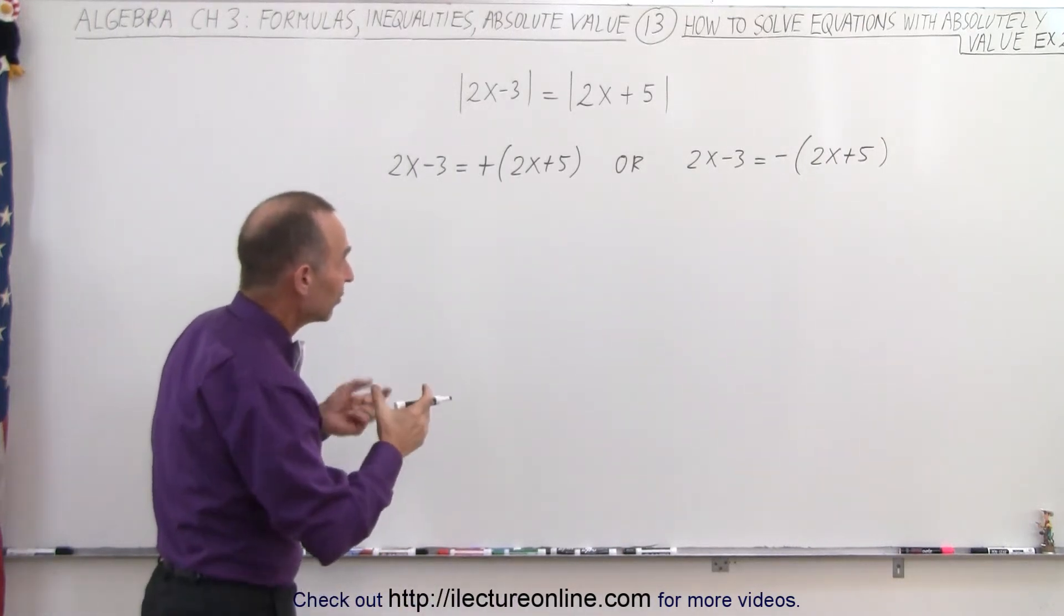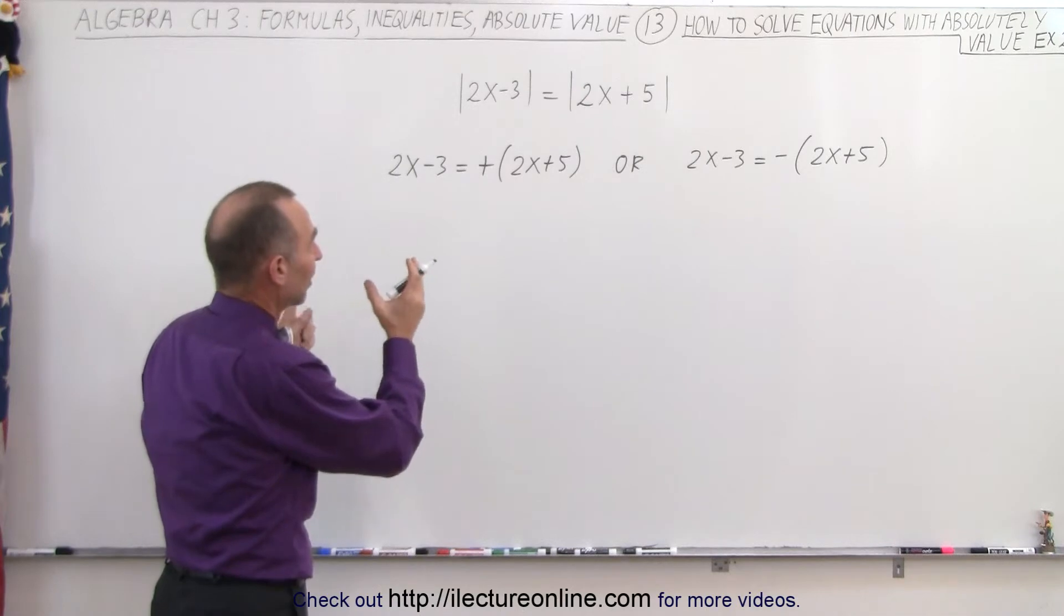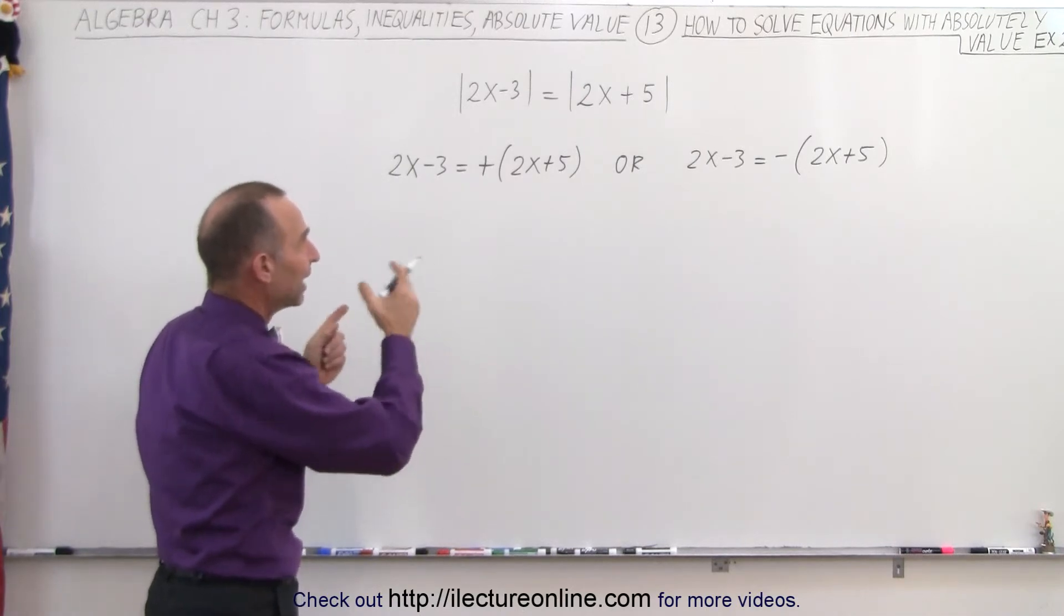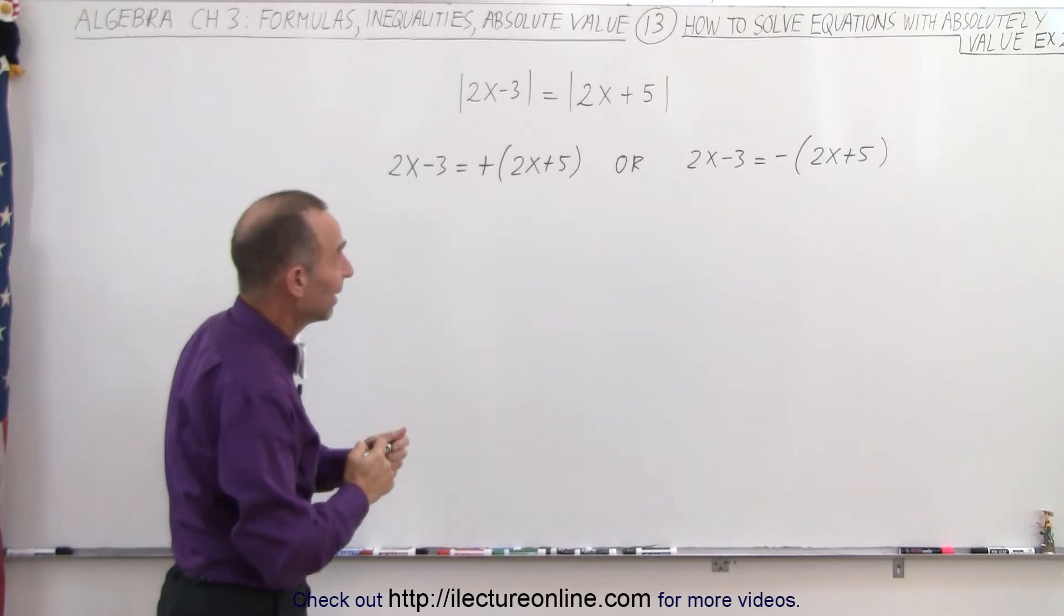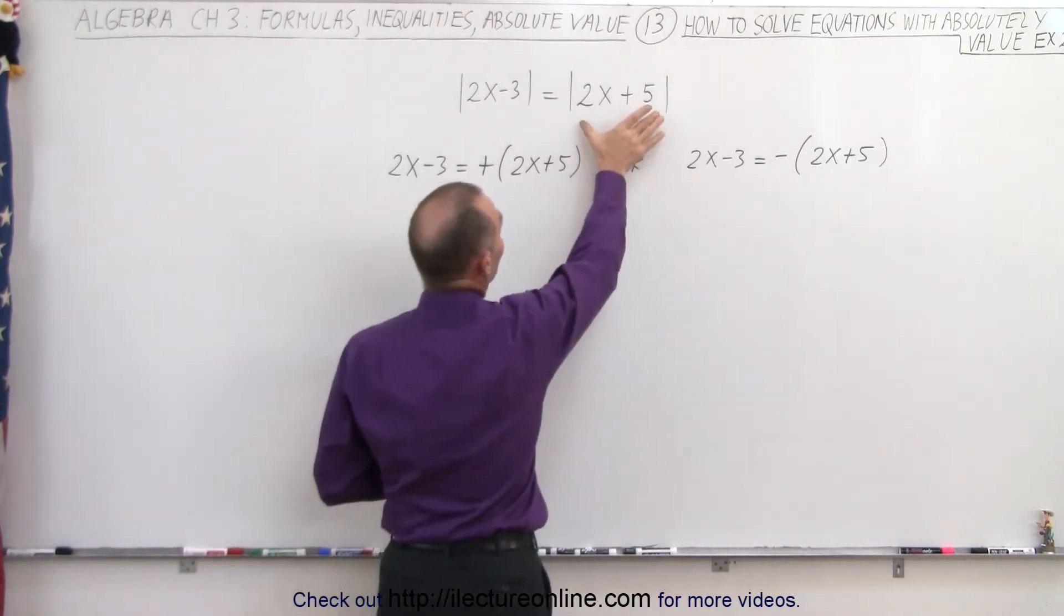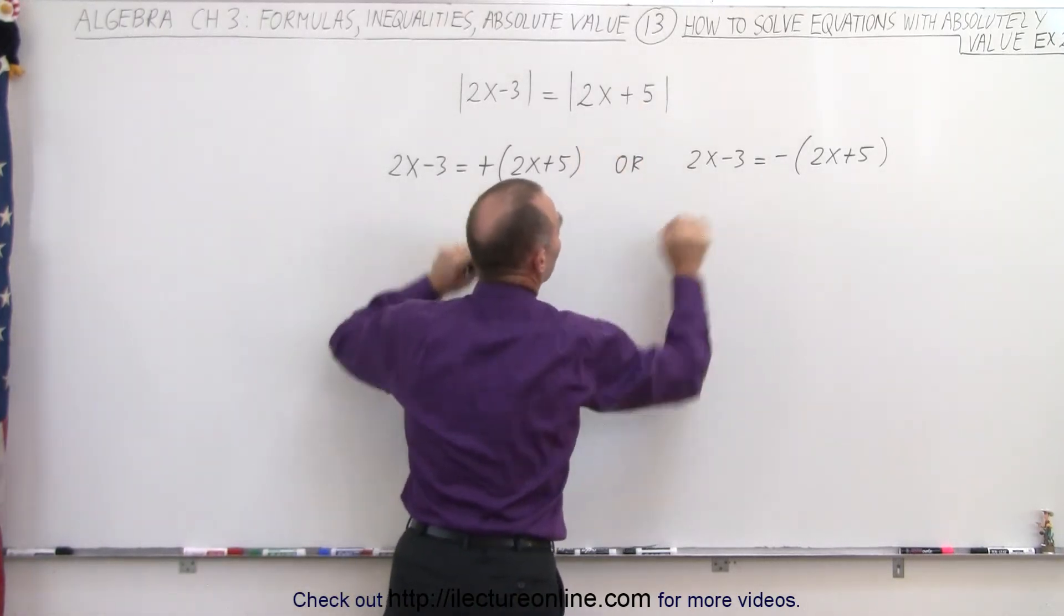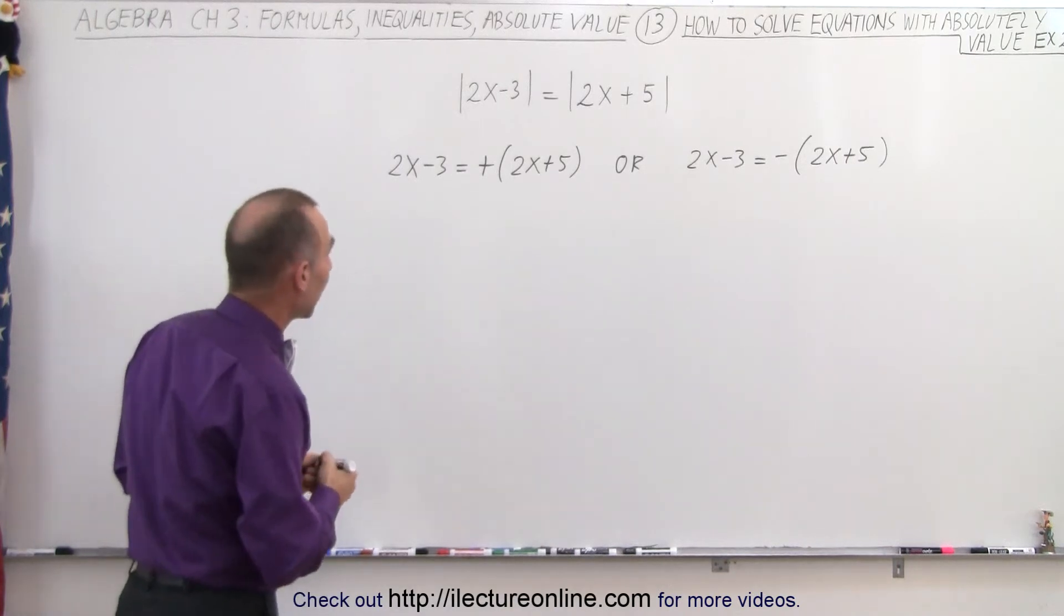So again, the idea is that you set what's inside the absolute value sign on the left side equal to the positive and negative values of what's on the right side. But if the right side is inside the absolute value sign, then you need to approach it like this. So let's go ahead and solve it and see what we get.